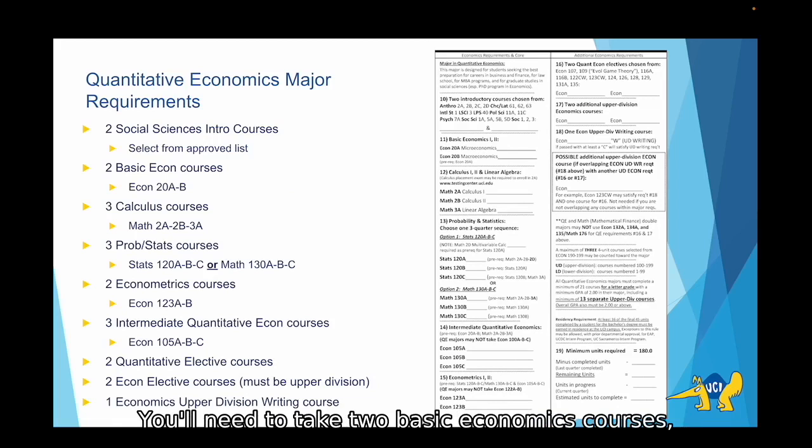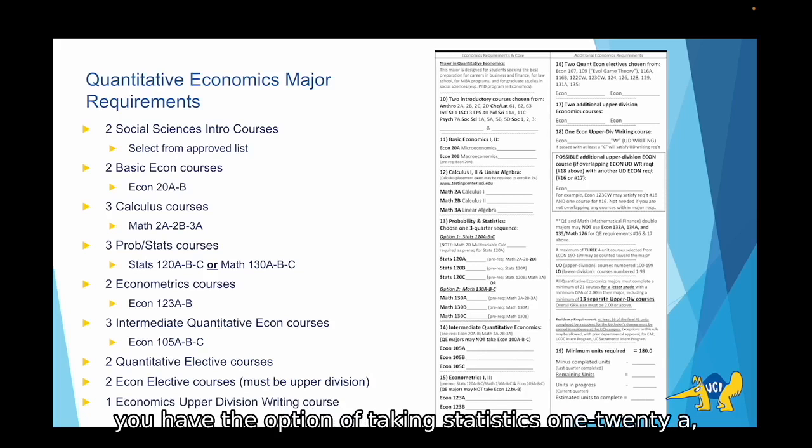You'll need to take two basic economics courses, Econ 20a and Econ 20b. As we mentioned before, you'll need to take Math 2a, Math 2b, and Math 3a. And then for your probability and statistics series, you have the option of taking Statistics 120a, b, and c, or Mathematics 130a, b, and c. Please keep in mind that these series are a year long and they start in fall and end in spring.